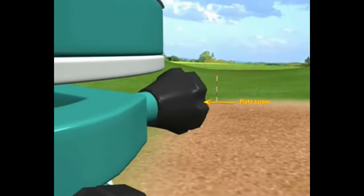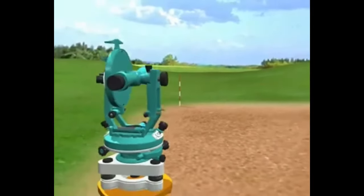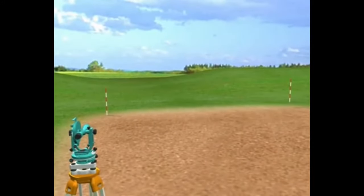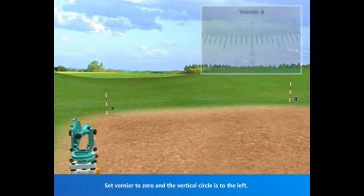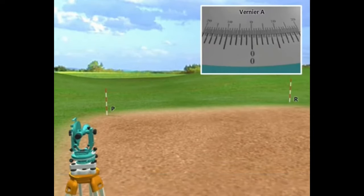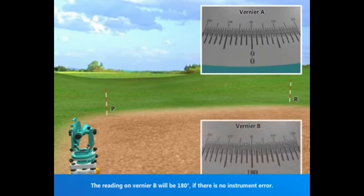Adjust the plate screw to move the theodolite horizontally. Set Vernier to 0 and the vertical circle to the left. The reading on Vernier B will be 180 degrees.